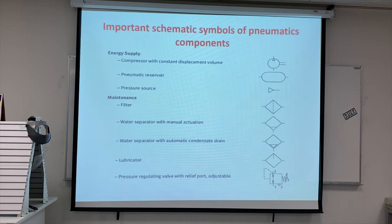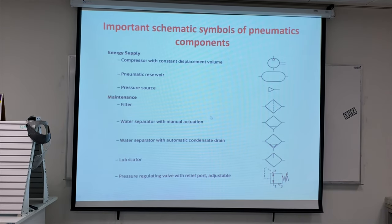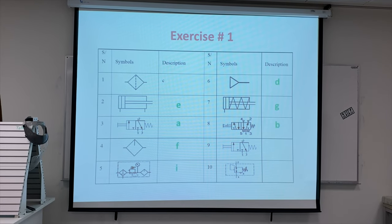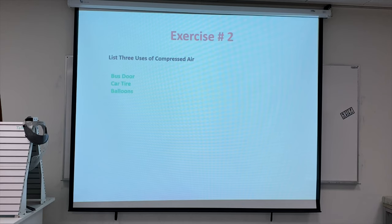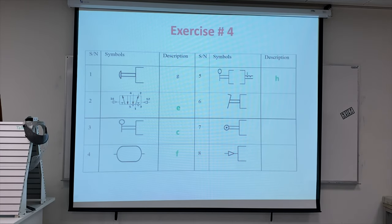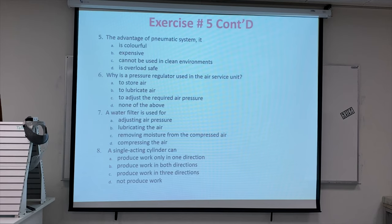These are important components of pneumatic systems — the compressor, pneumatic supply line, and pressure supply. Students can read from the book. All these are important symbols which we discussed. Here are exercises number 1 through 6, with answers provided. Thank you.